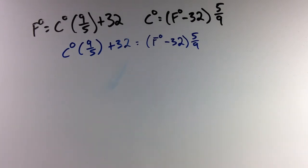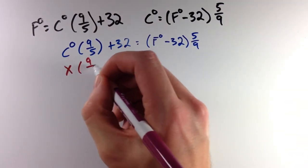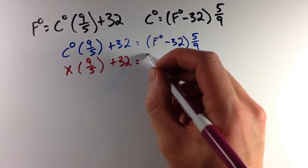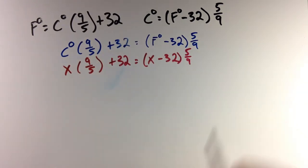So let's just use x, everyone's favorite little variable here. x × (9/5) + 32 = (x - 32) × (5/9).